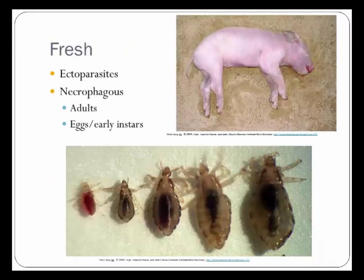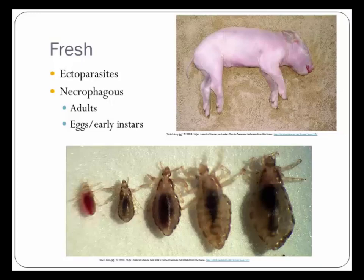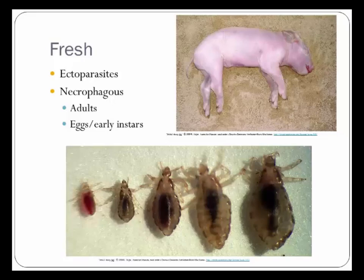From the moment of death, the insect fauna of the body begins to change. In the fresh stage we mostly see ectoparasites leaving. Flying blood feeders like mosquitoes leave very quickly — as soon as the blood stops pumping, they fly away. Things like fleas, ticks, and lice, which spend most of their life cycle on a warm-blooded host, will leave as the body cools during algor mortis.